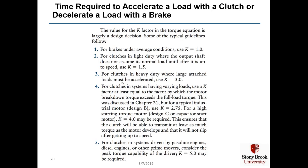The k factor is a design decision similar to the design factor n. For brakes on average conditions, use k = 1. For clutches in light duty, k = 1.5; for heavy duty, k = 3. For clutches in systems with variable loads, use k at least equal to the factor by which the motor breakdown torque exceeds full-load torque — typically k = 2.75 for an industrial motor, k = 4 for a high-starting motor, and k = 5 for systems driven by gasoline or diesel engines.